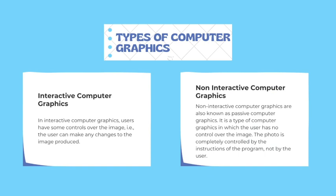Types of computer graphics: Interactive computer graphics — in interactive computer graphics, the user has some control over the image; that is, the user can make any changes to the image produced. Non-interactive computer graphics, also known as passive computer graphics, is a type in which the user has no control over the image. It is completely controlled by the program, not by the user.